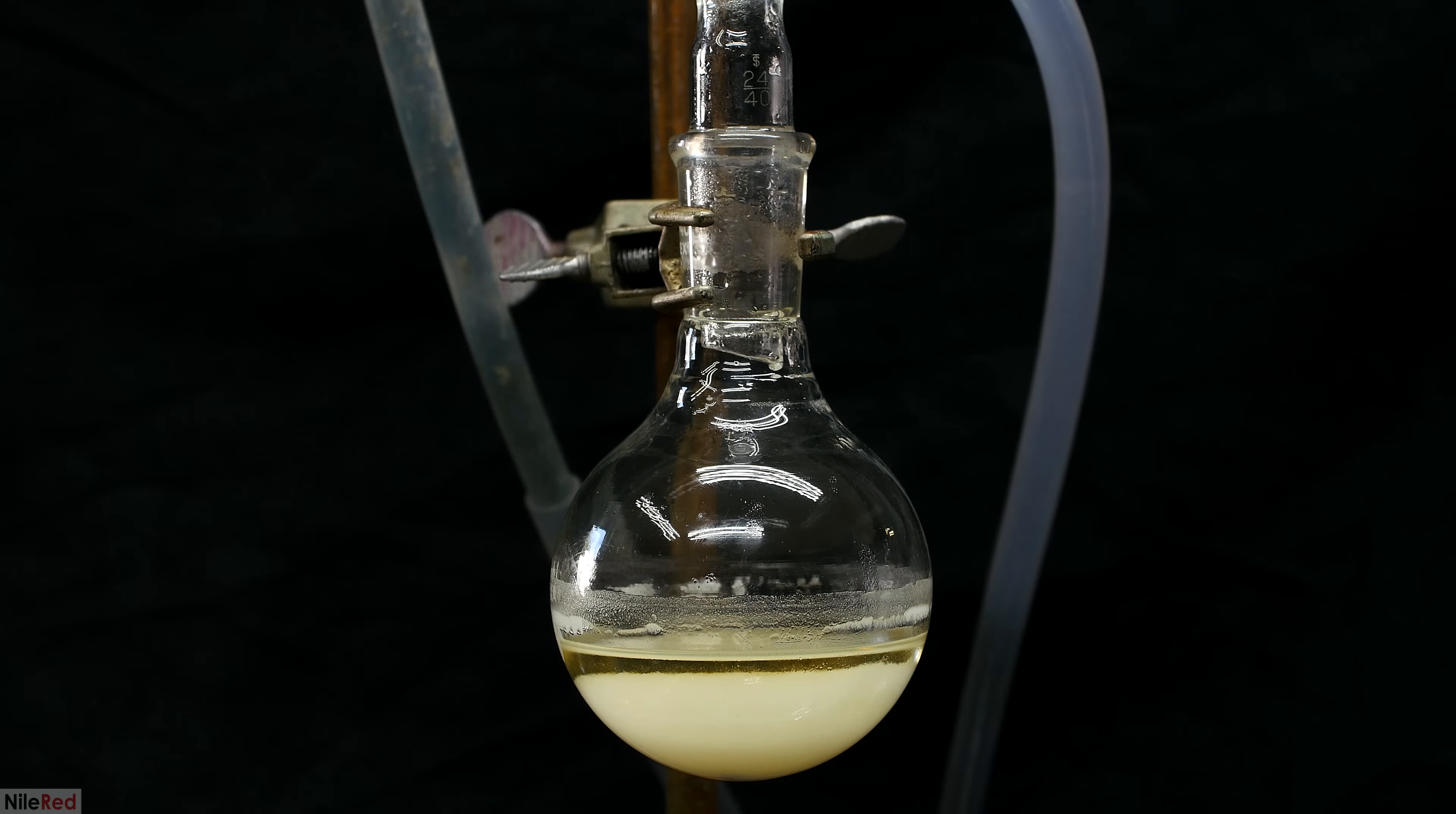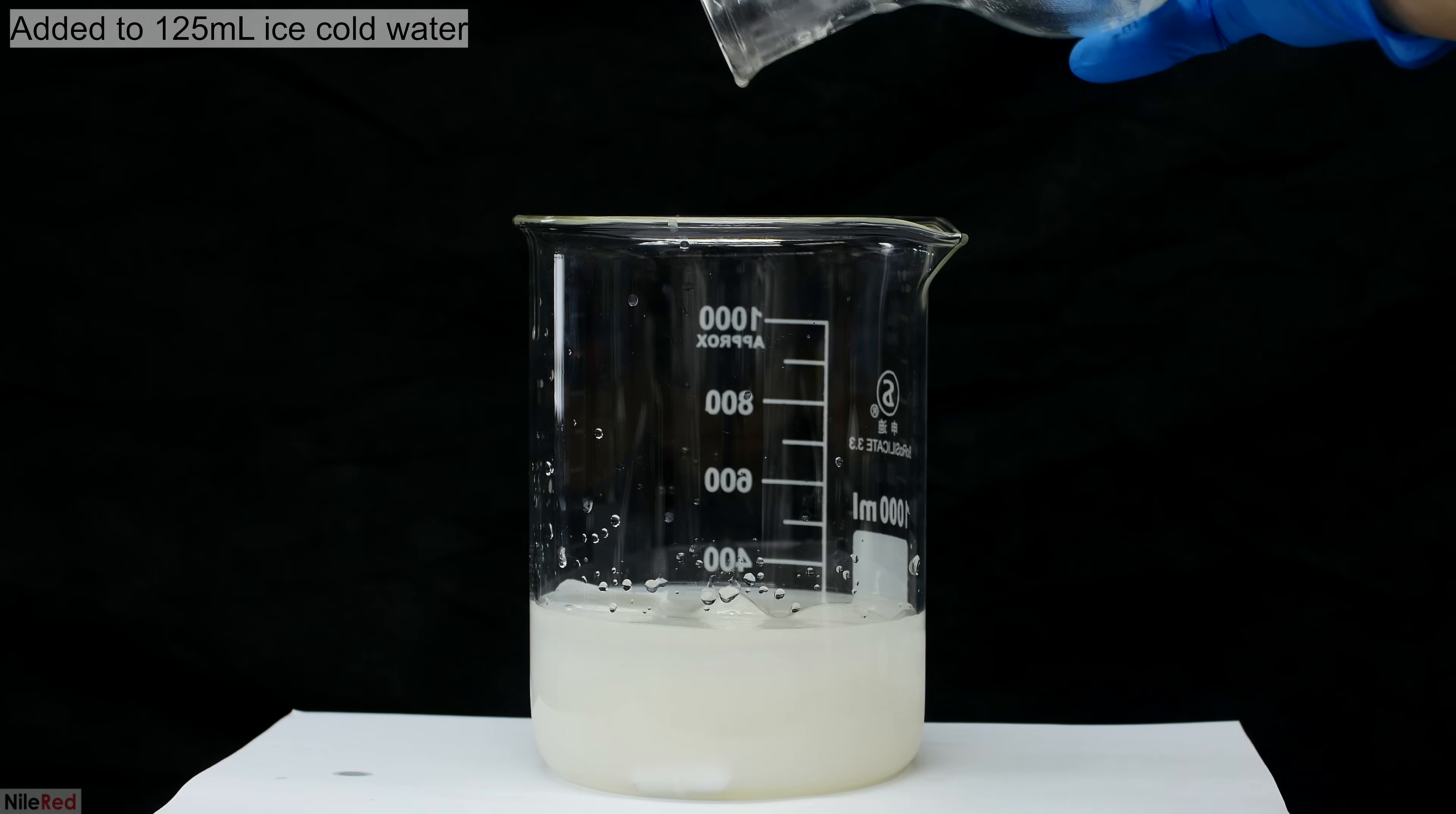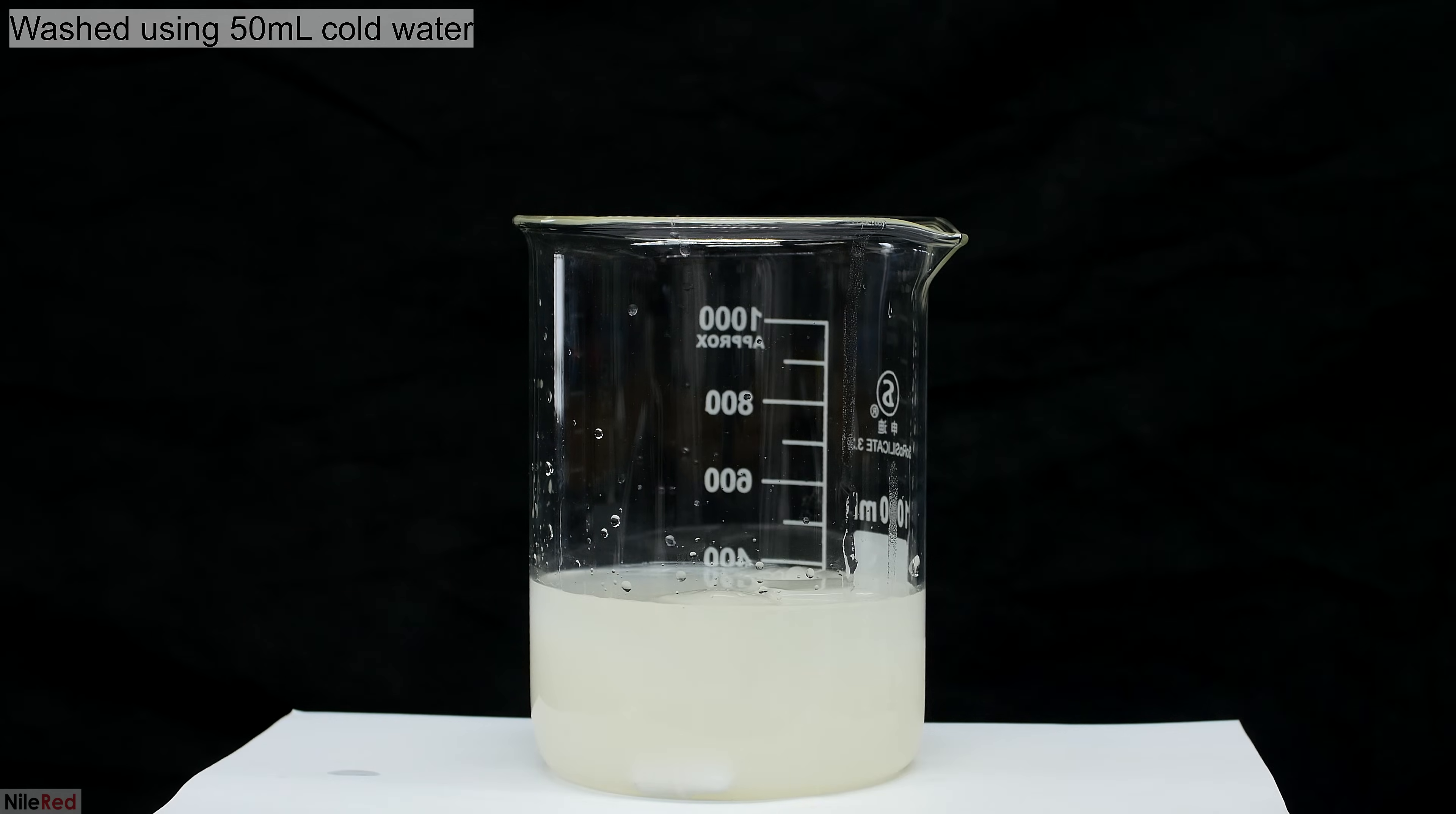I remove the oil bath and I let the reaction mixture cool down to room temperature. Once it gets to around room temperature, I pour the reaction mixture into about 200 milliliters of ice cold water. I wash the flask with about 50 milliliters of cold water and I add that to the beaker as well.